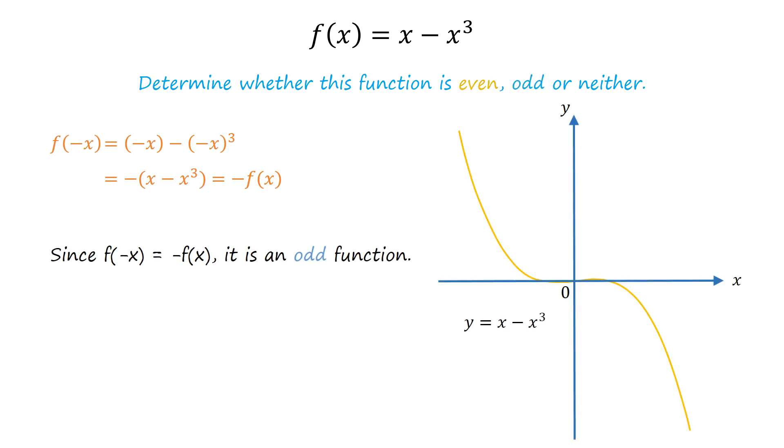Since f of negative x equals negative of f(x), the given function is odd. It can be seen that the graph of this function is symmetric about the origin.